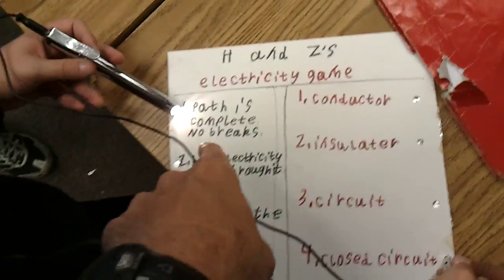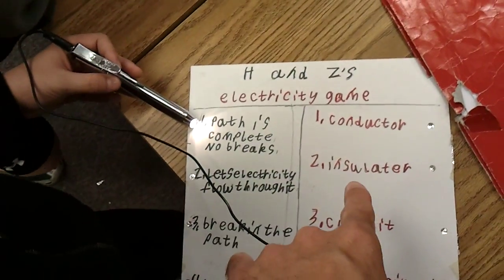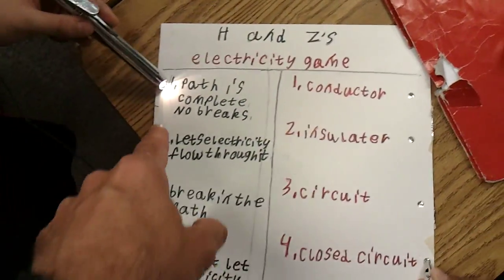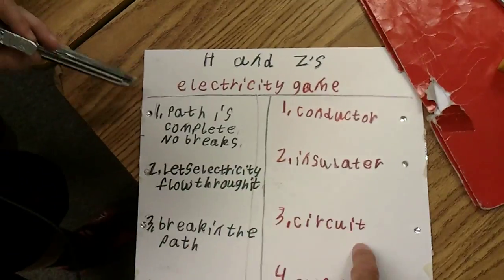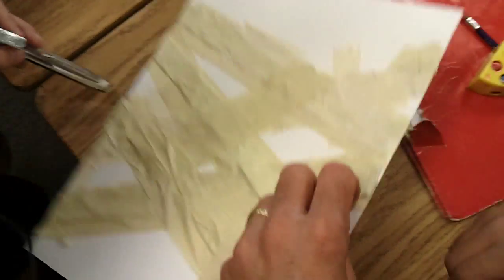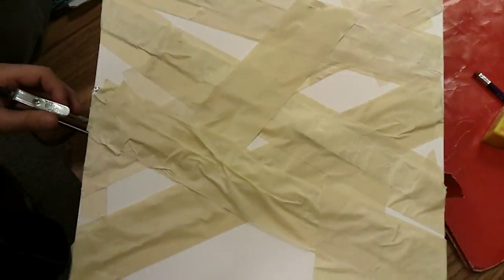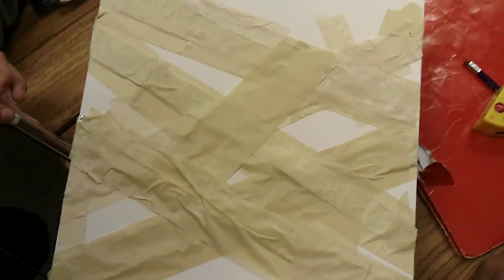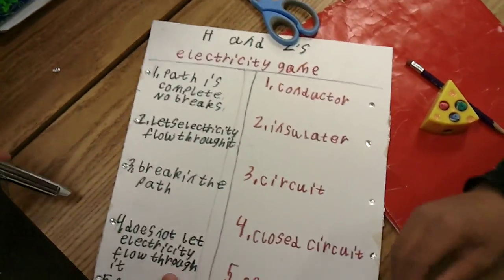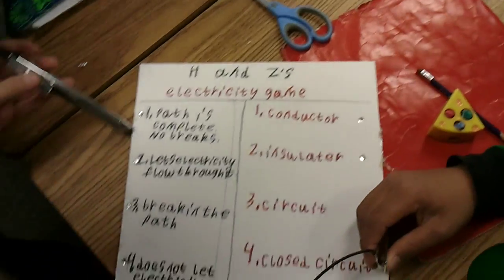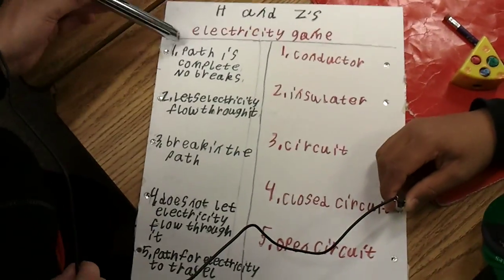So the goal is to match up the correct definition with the correct term, and they had to create a path on the backside of that that would allow the test pen to light up if they have the correct answer.